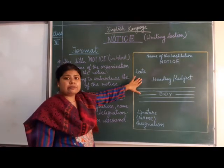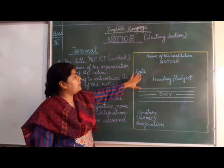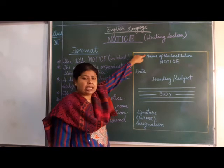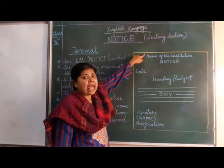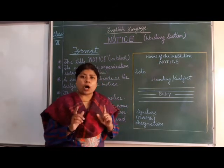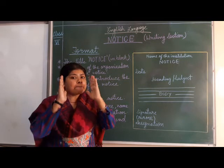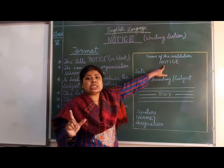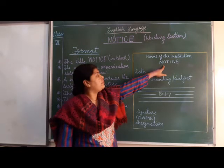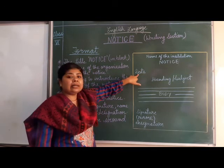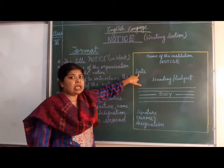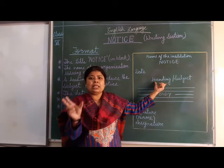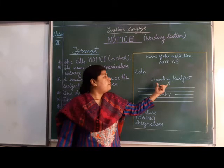Now as we have seen the details, we can see the format here written for you all to understand clearly. The name of the institution or organization should be in block letters and placed in the middle of the box. Then the word NOTICE is mentioned using block letters. Then leaving one line, write the date of issuing the notice on the left side. Then leaving another line, write the heading — in short, the main purpose of issuing this notice.